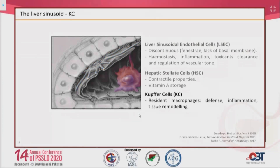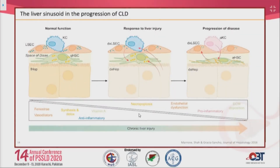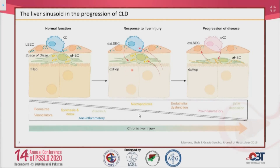These cell types undergo profound changes during chronic liver disease. In a healthy liver, LSECs, Kupffer cells, quiescent hepatic stellate cells, and hepatocytes maintain organ homeostasis. In response to injury, LSECs and hepatocytes are first to respond and affect neighboring cells paracrinally. In chronic liver disease, all cell types become dysfunctional — pro-inflammatory, pro-constrictory, necroapoptotic, and profibrotic.